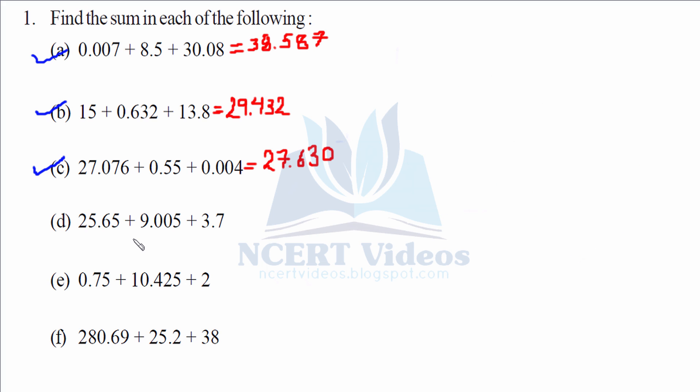Part D: 25.65, 9.005. Just place the decimal below decimal and rest of the digits will follow. You may wish to place other parts with zero or you may not. So 10 plus 5, 15, 18, 3.